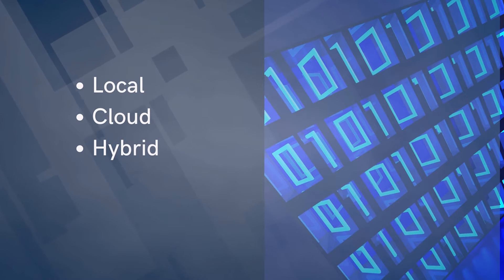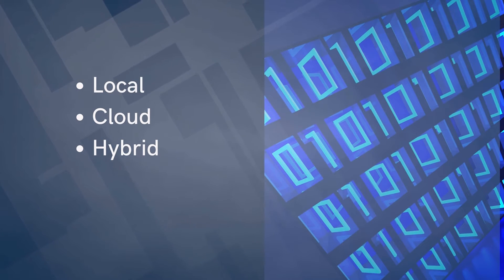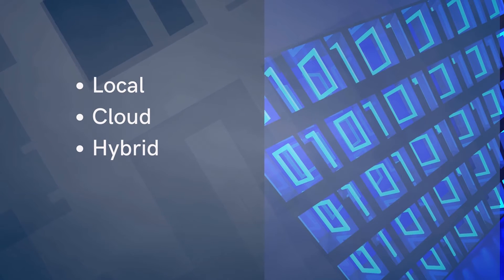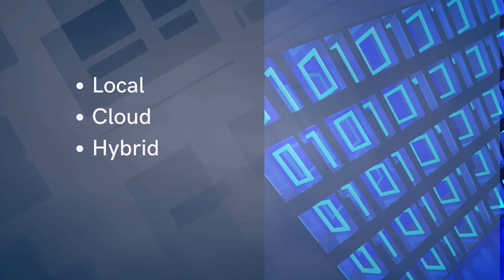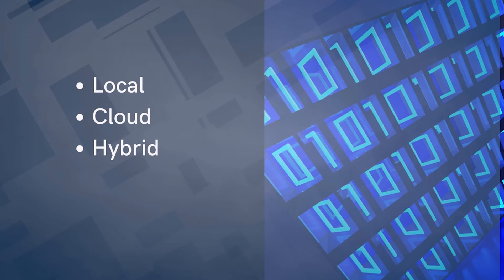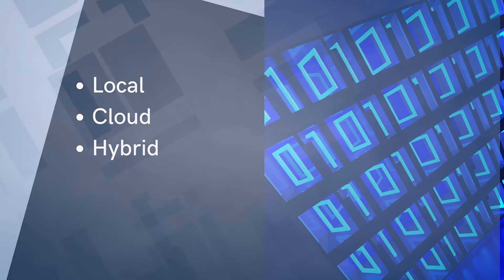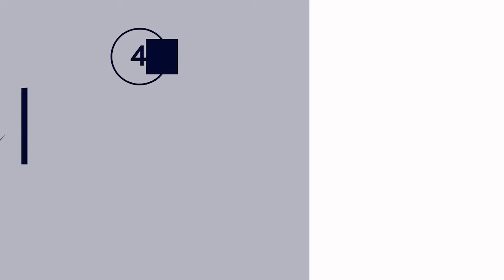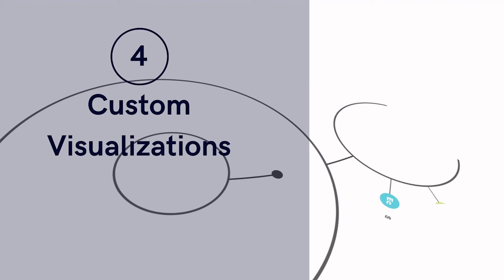Number three is the experiment data storage. Experiment tracking tools may store the experiment data either locally, in the cloud, or in both. Having data stored locally has the advantage of being able to analyze it on the fly using your own tools, whereas having it stored in the cloud is best for preserving and sharing knowledge. The optimal solution is to have both, but this is not supported by all tools.